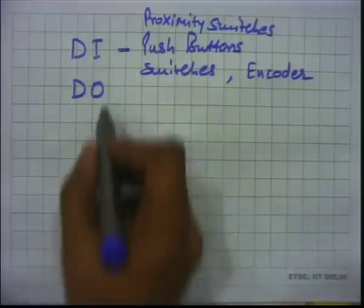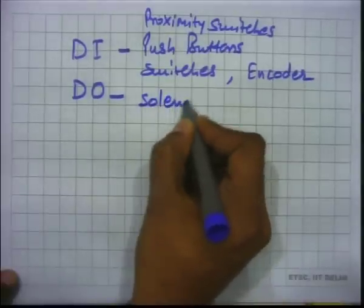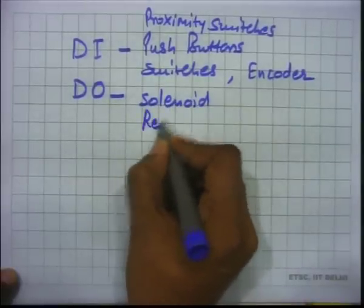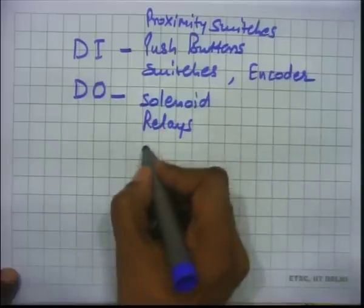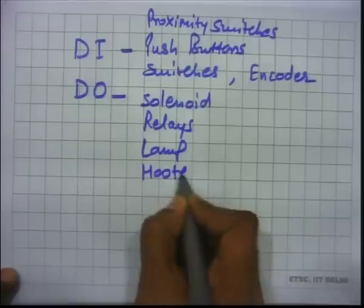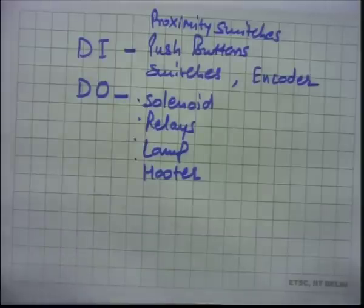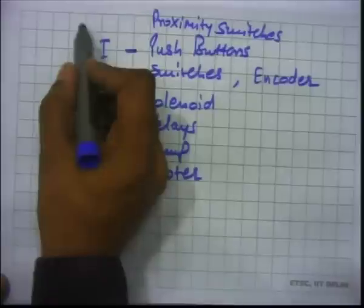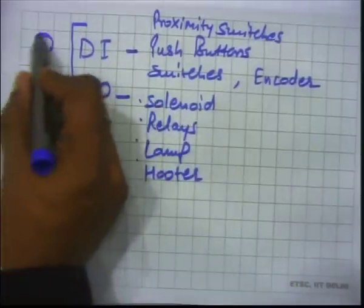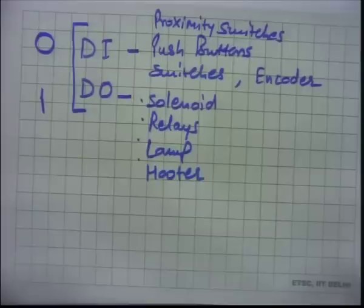For digital outputs — DO — examples are solenoids, relays, lamps, and hooters. These are outputs where you are just making them on and off — two states. When I say digital, it means either 0 or 1, whether it is an input device or an output device; it will just work on two-state logic. 0 means off, 1 means on.